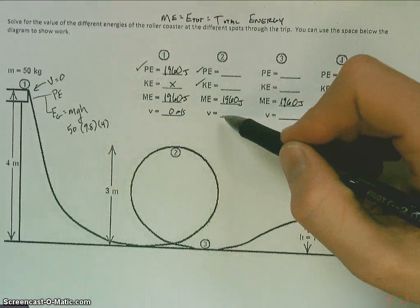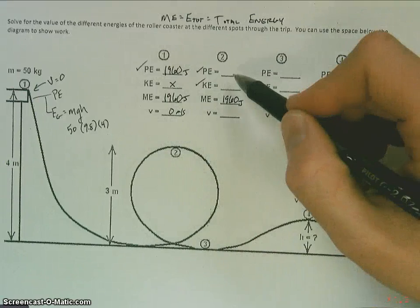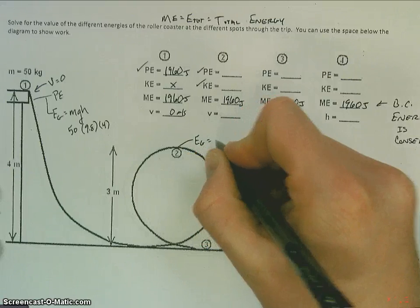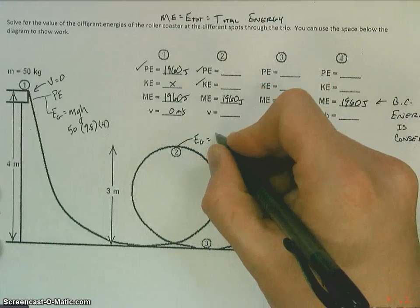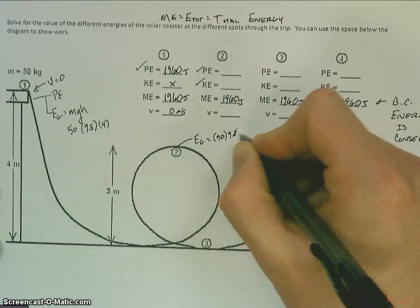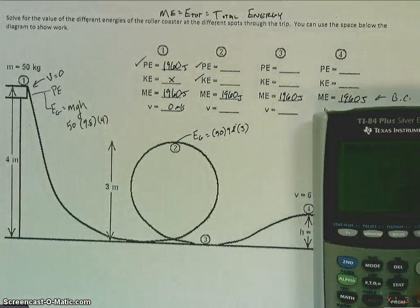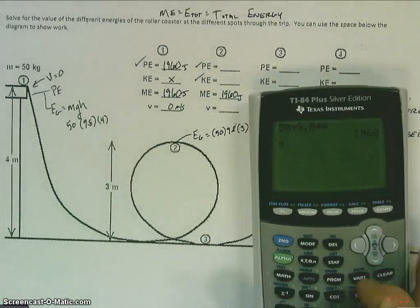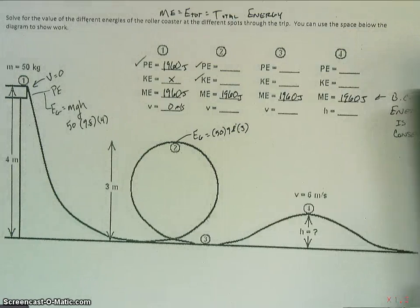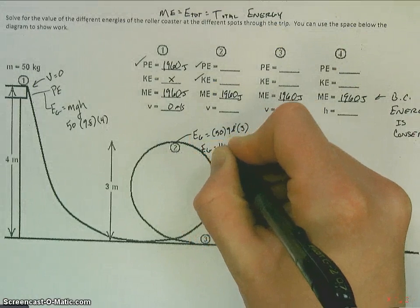Now I don't know the velocity yet, so I can't figure out the kinetic energy, but I do know the height at which it's at at this point. So I'm going to solve for what I can solve for. So EG here is equal to MGH, which is the mass 50 times gravity 9.8 times the height which is 3. And that gives us 1470 joules.